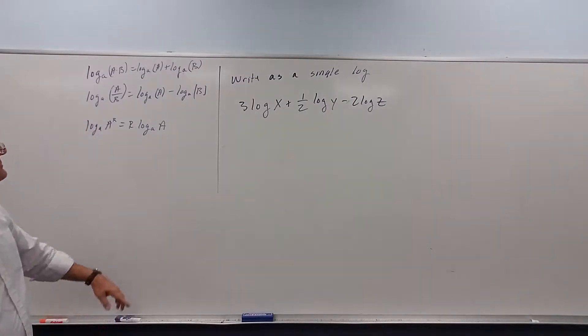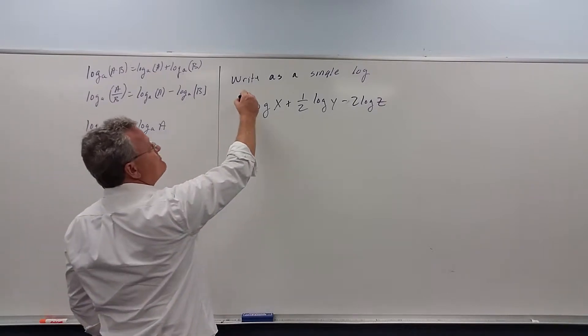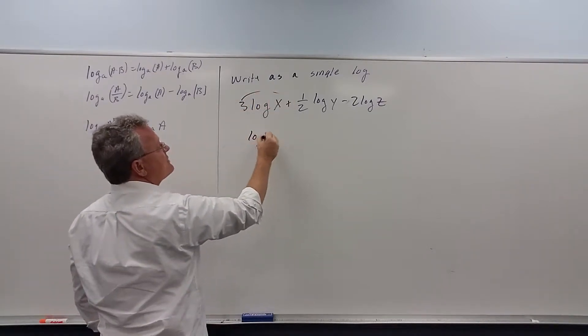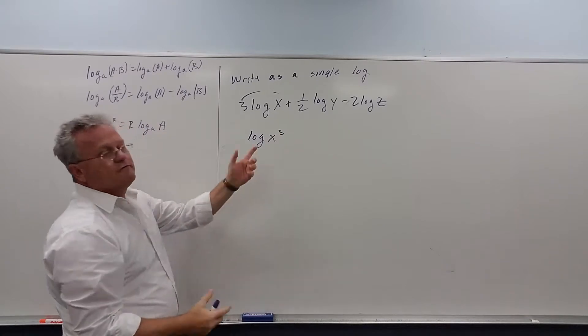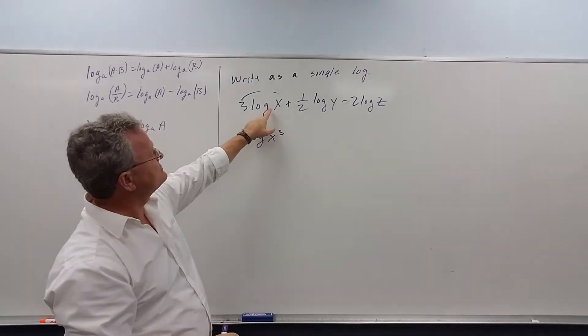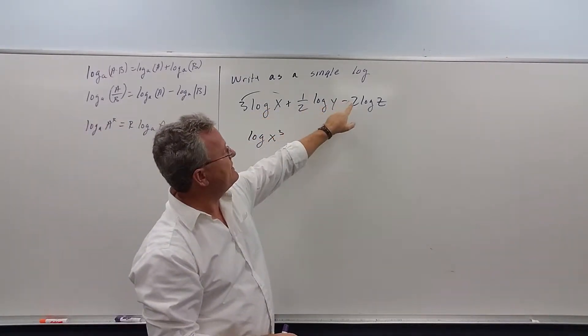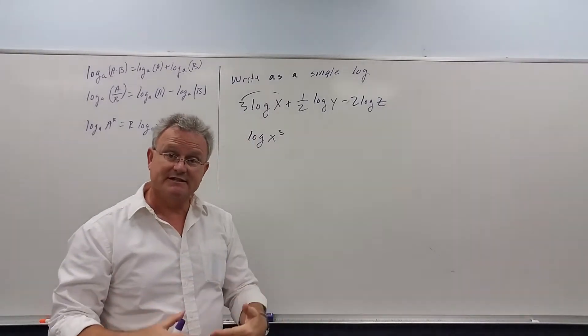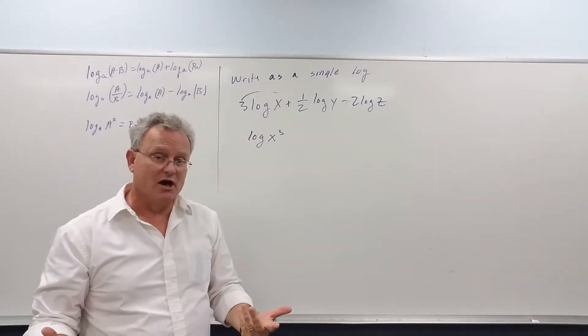So the first step is to use this property, which says the coefficient, or the number in front, can be brought up as an exponent. So we bring this up as an exponent, we get the log of x cubed. Let me just point out here, notice there's no number down here for the base, that means the base is 10, it's a common log.